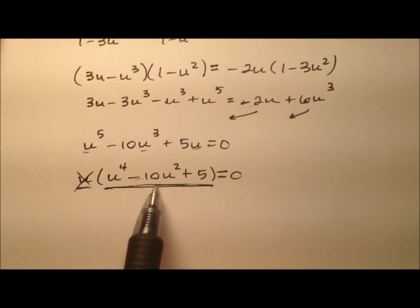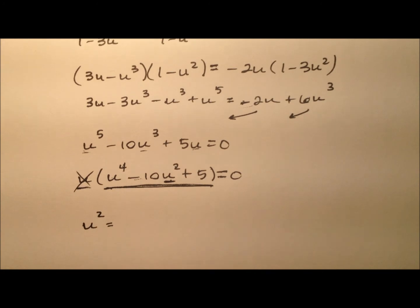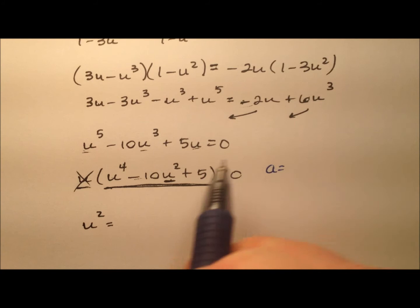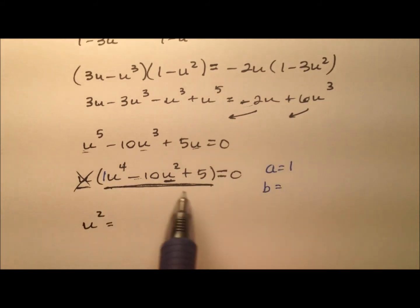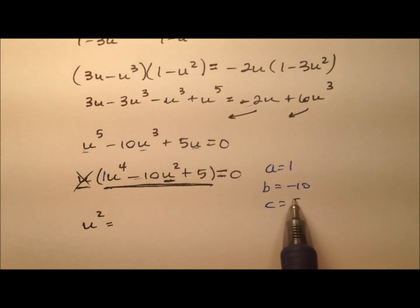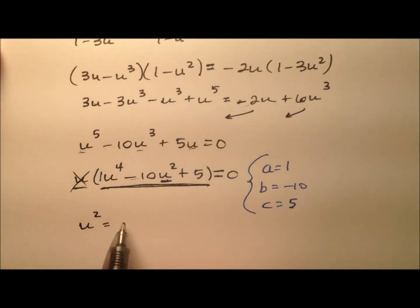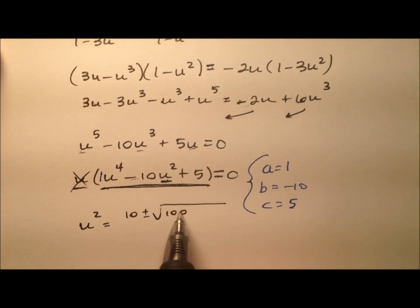It looks like it's kind of in a quadratic form. The degrees here are 4, 2, and 0. So I can use the quadratic formula on it. But it's going to be u squared that I'm actually solving for. Okay, so let's get my a, b, and c values. So it looks like a is 1 and b is negative 10 and c is 5. Alright, so let's plug them into my formula. So it's the opposite of b plus or minus b squared minus 4ac all over twice a.